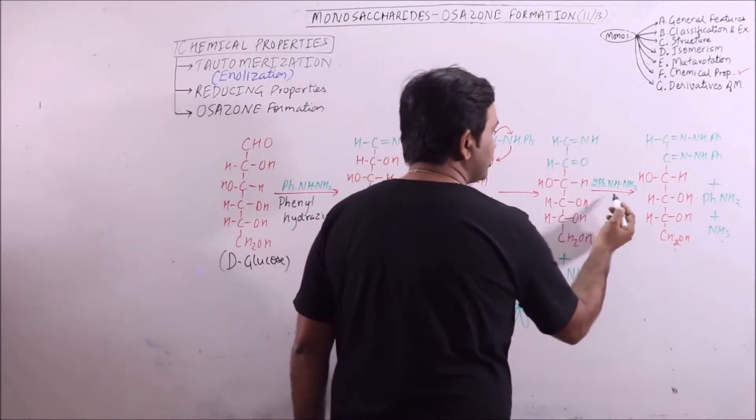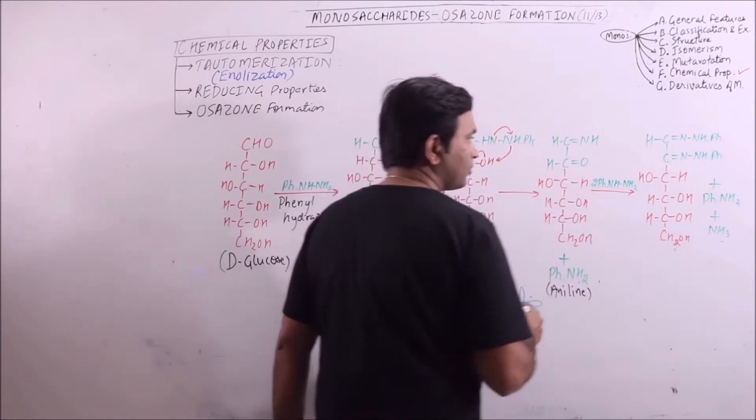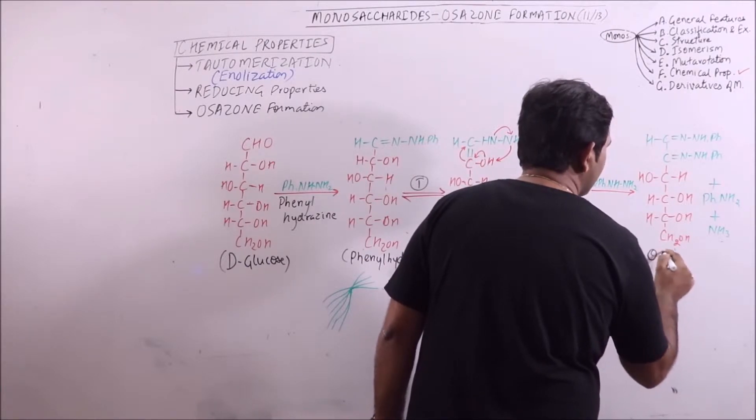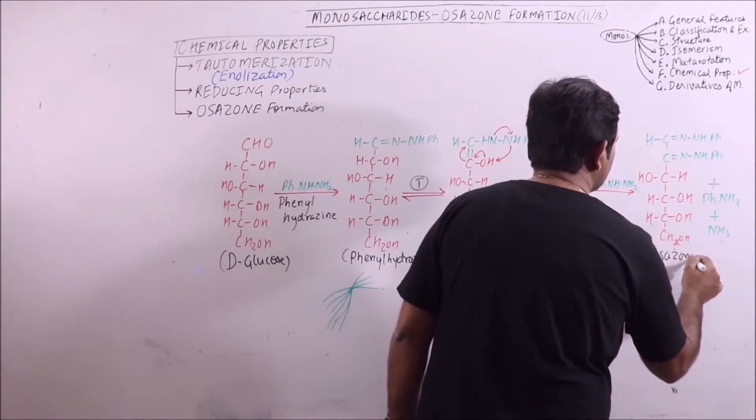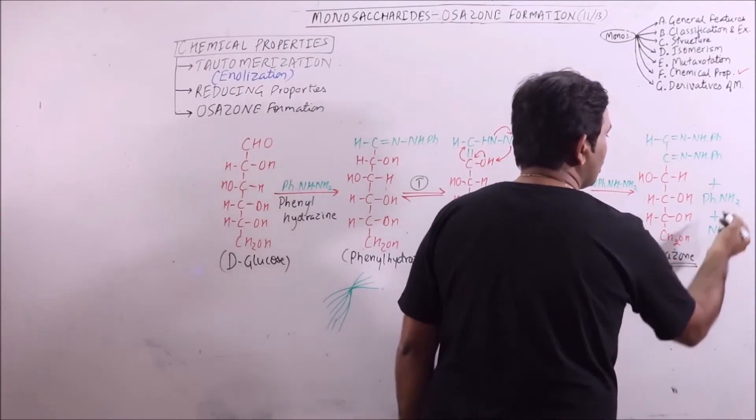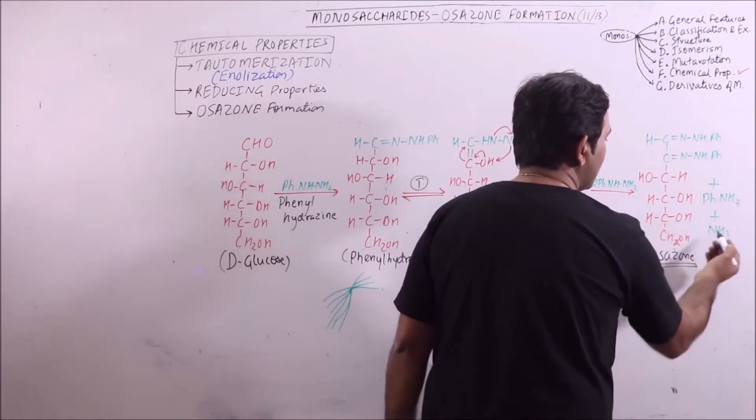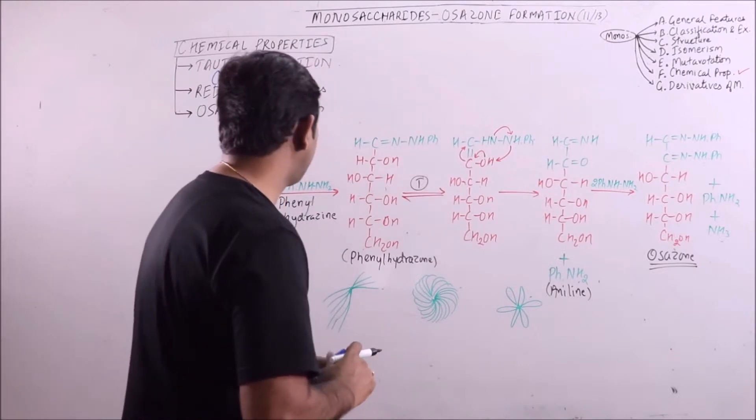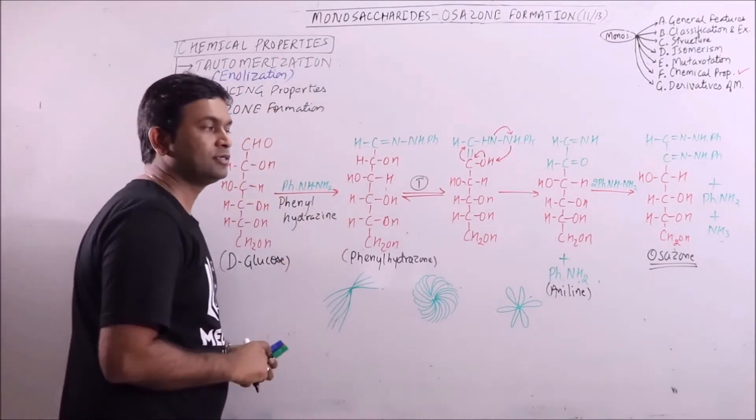Further, two molecules of phenylhydrazine are again added and the resulting crystals are obtained of osazone along with release of aniline and one molecule of ammonia. So in formation of osazone, three molecules of phenylhydrazine are consumed.